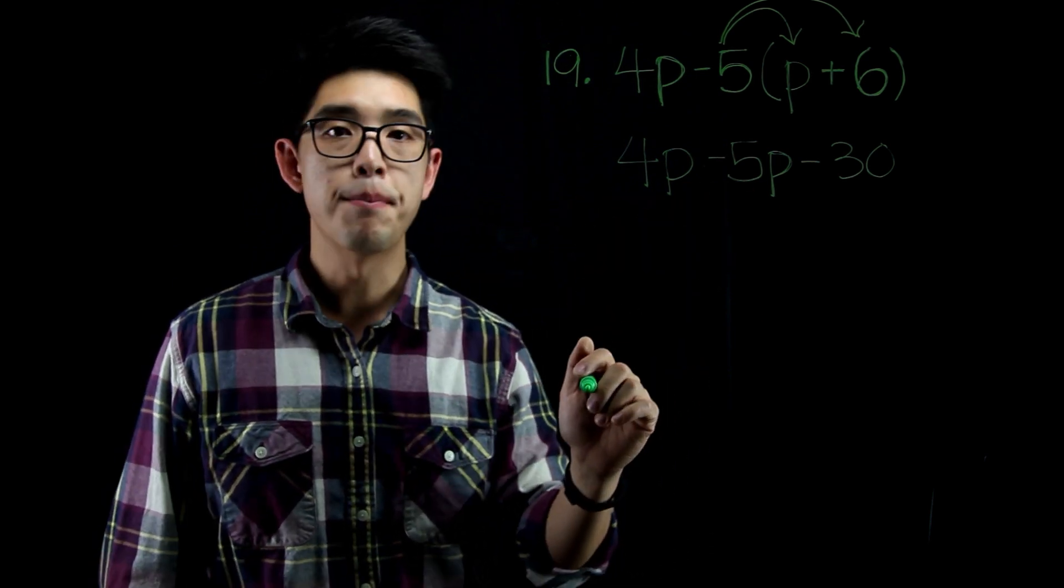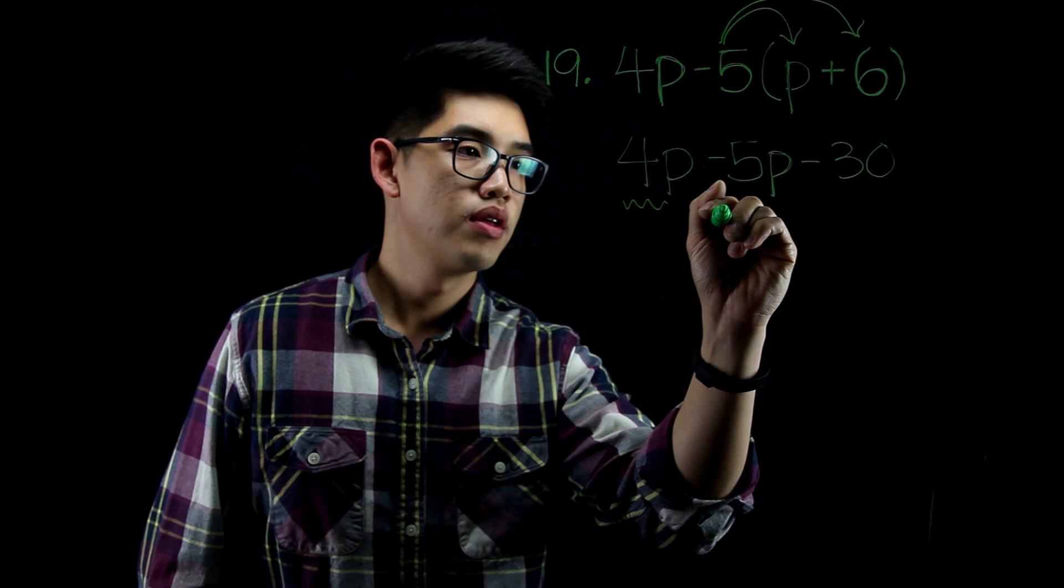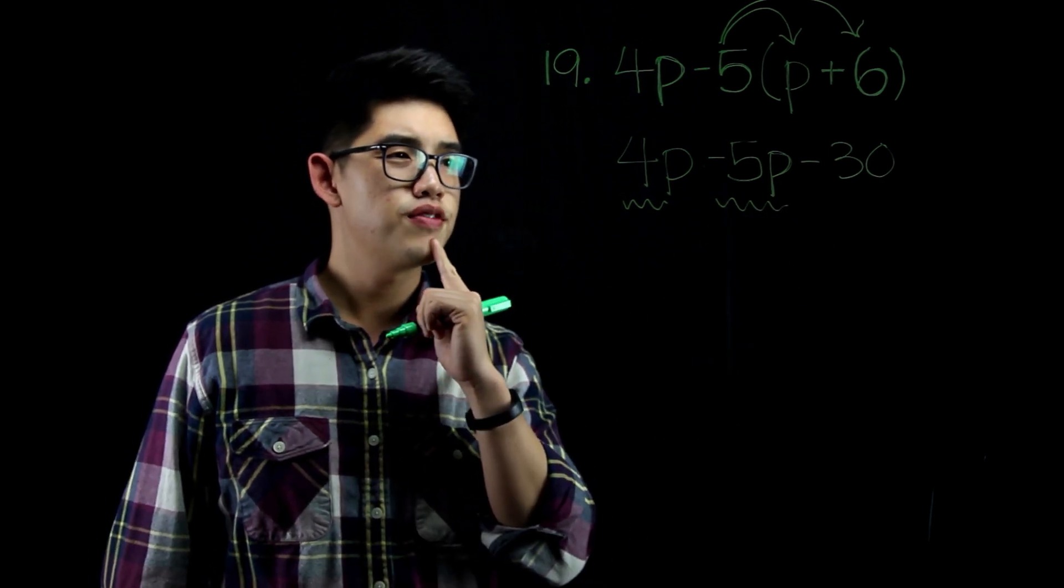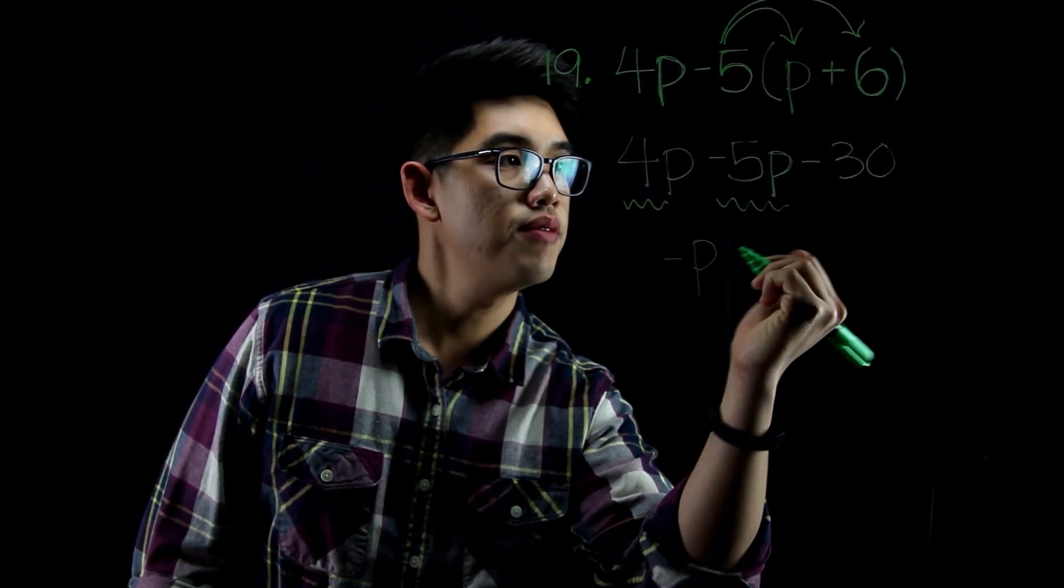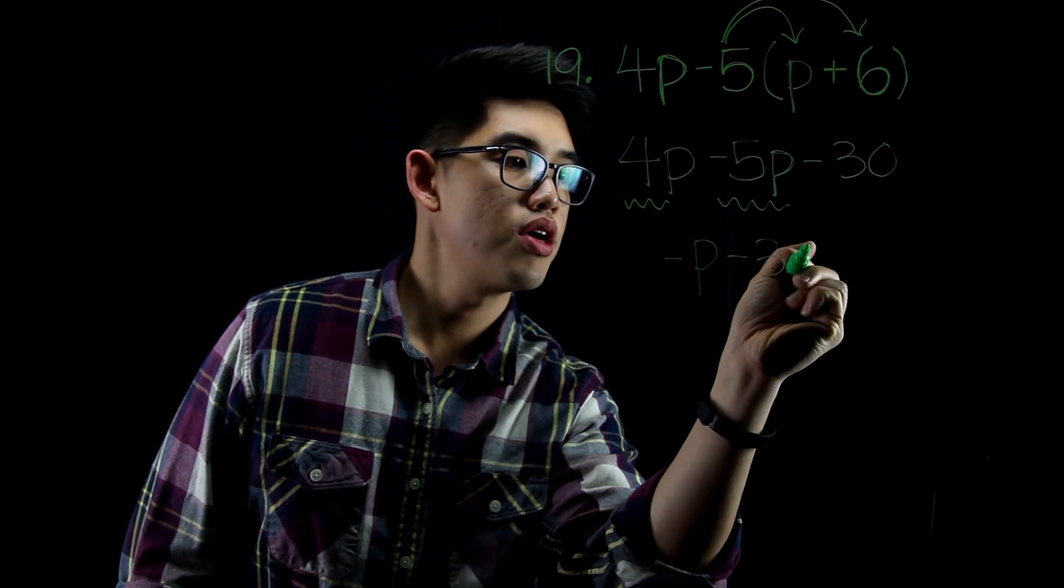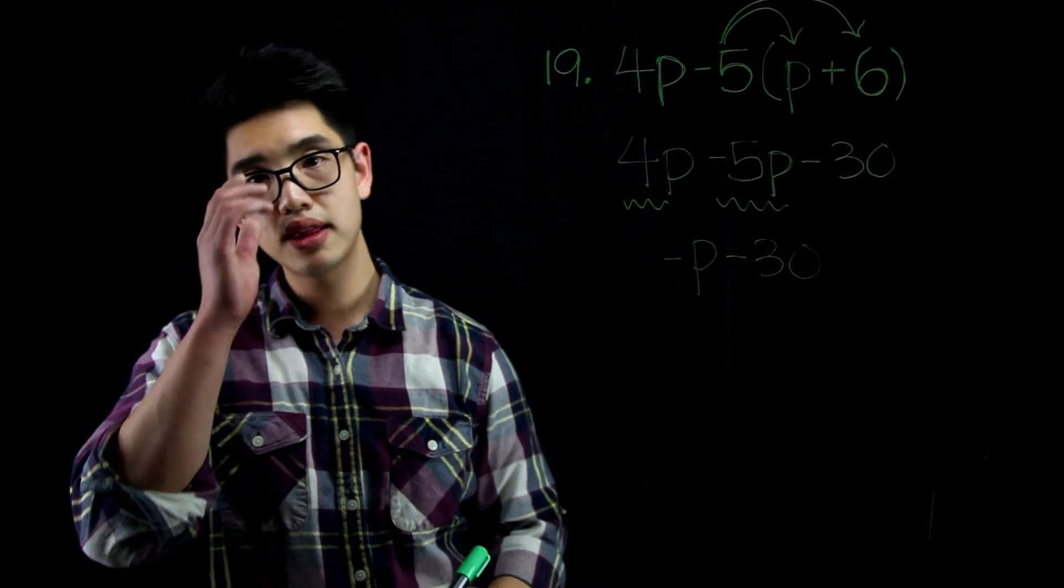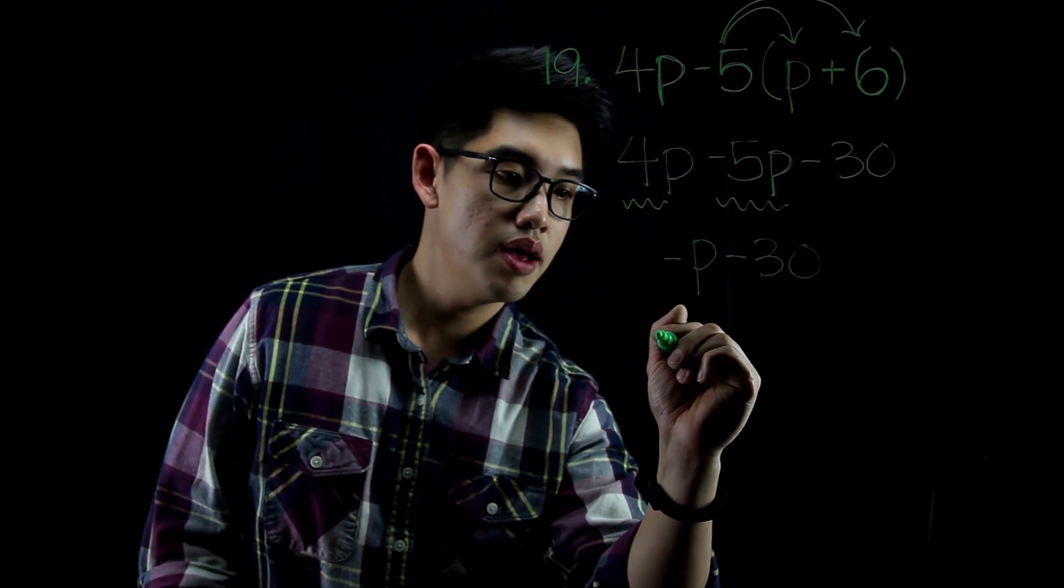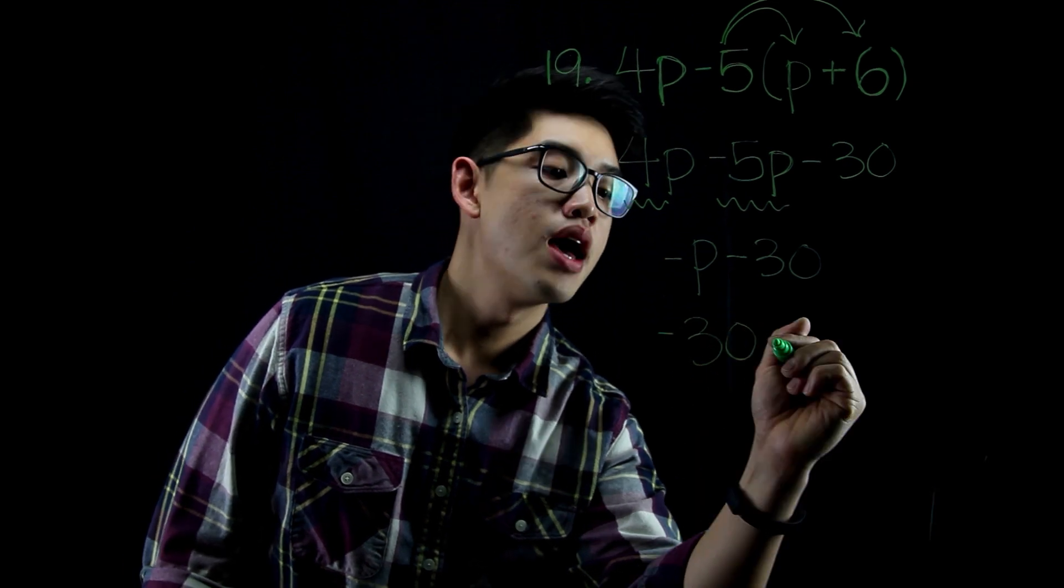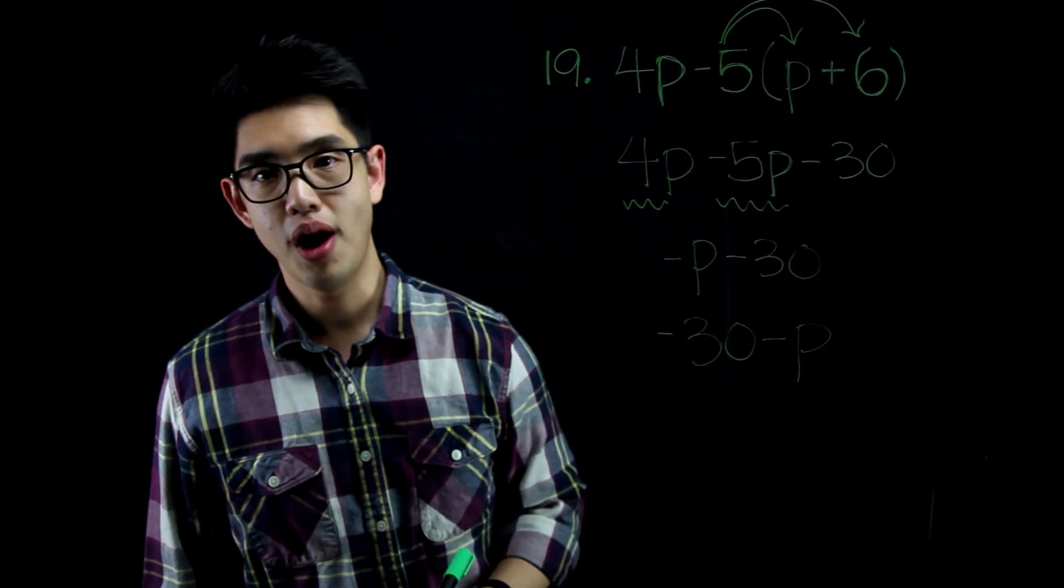You have 4p here. You have minus 5p here. 4p minus 5p, that's going to be negative p and then subtract it by 30. If you didn't put your answer like that, you wrote negative 30 minus p. That is okay too because of the commutative property.